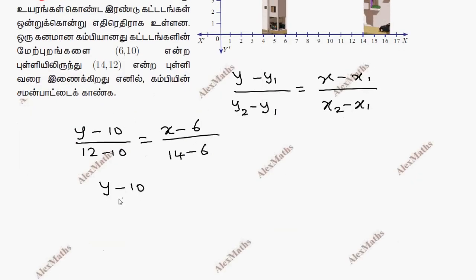If we cross multiply, y minus 10 by 2 equal to x minus 6 by 8.